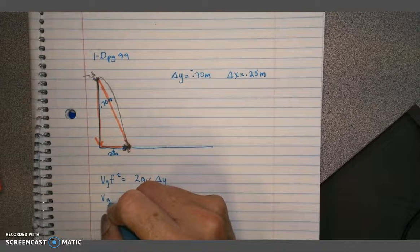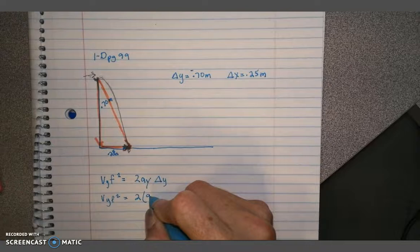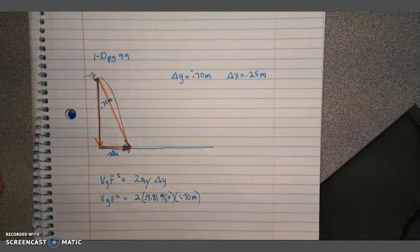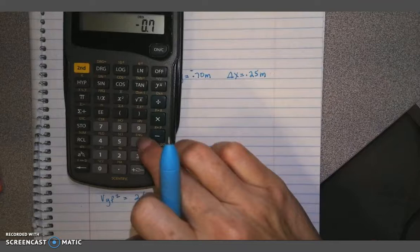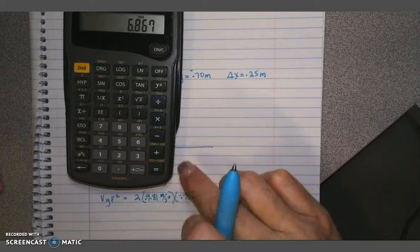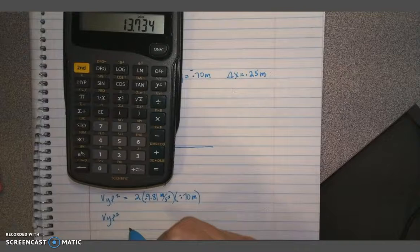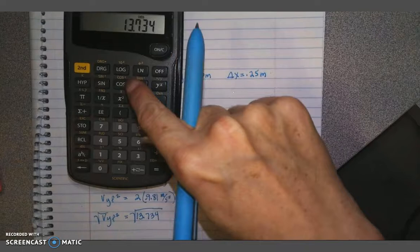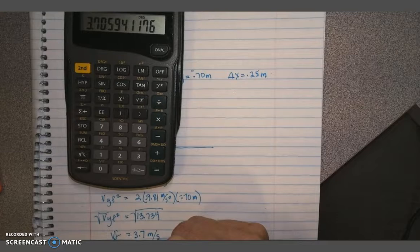So we'll substitute our numbers in here. Remember that the acceleration in the y direction is always equal to negative 9.81 meters per second squared. And delta y is negative 0.70 meters. When we multiply these using our calculator times 2, this gives me the v_y final squared is equal to 13.734. Square root of both sides, and that tells me that the final velocity in the y direction is 3.7 meters per second.